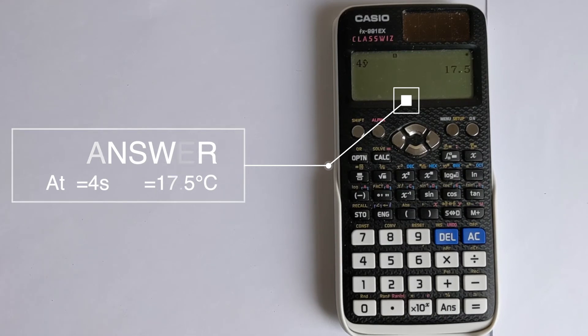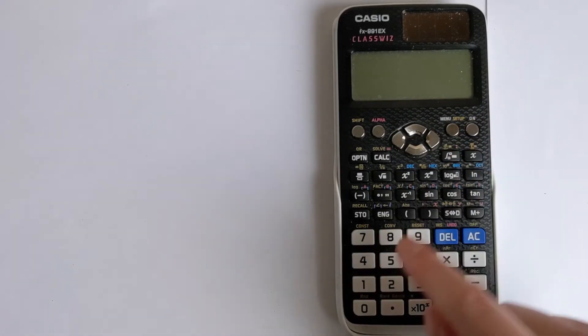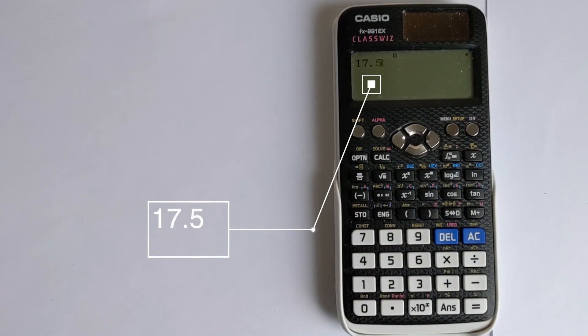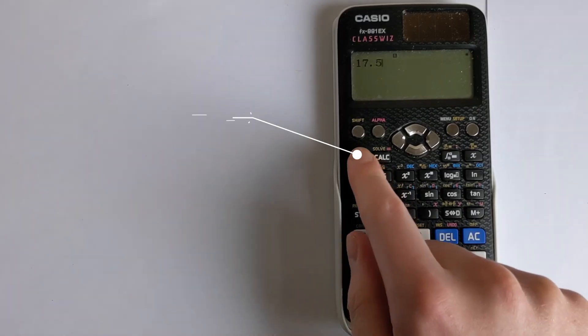This can also do interpolation in the opposite direction, so we might put in 17.5, which is our temperature corresponding to the y data set. And we want to find what the x would be at 17.5. So we can do the same thing.